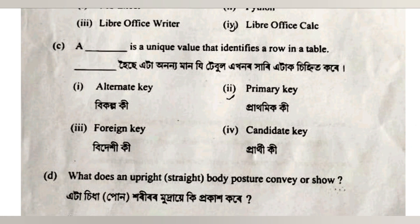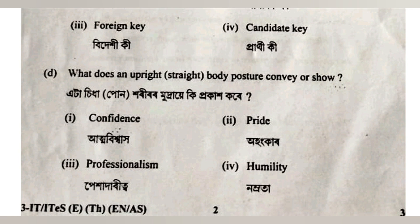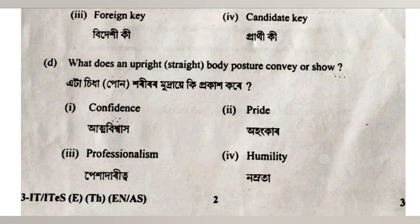Number C: it is a unique value that identifies a row in a table. The correct answer is primary key. Number D: what does an upright or straight body posture convey? The correct answer will be confidence.